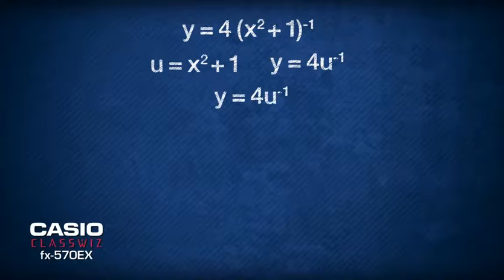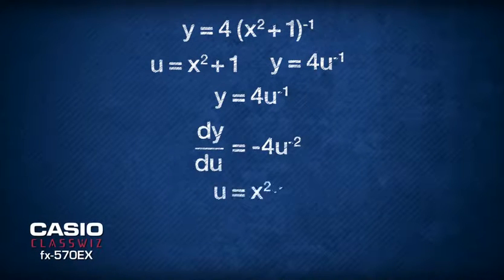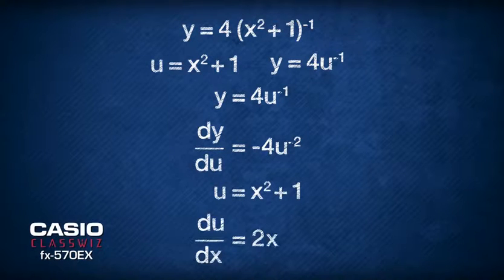Differentiating y with respect to u gives us dy/du equals negative 4 times u to the power of negative 2. Differentiating u with respect to x gives us du/dx equals 2x.